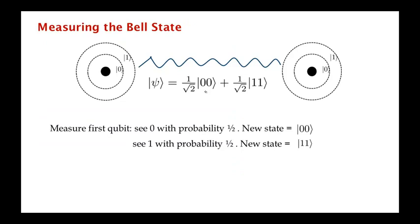We already talked about the Bell state, which is the superposition of 0,0 and 1,1. And then we talked about measuring the Bell state, which seemed a bit paradoxical because if we measure the first qubit, we see 0 and 1 with equal probability. But if we see a 0,